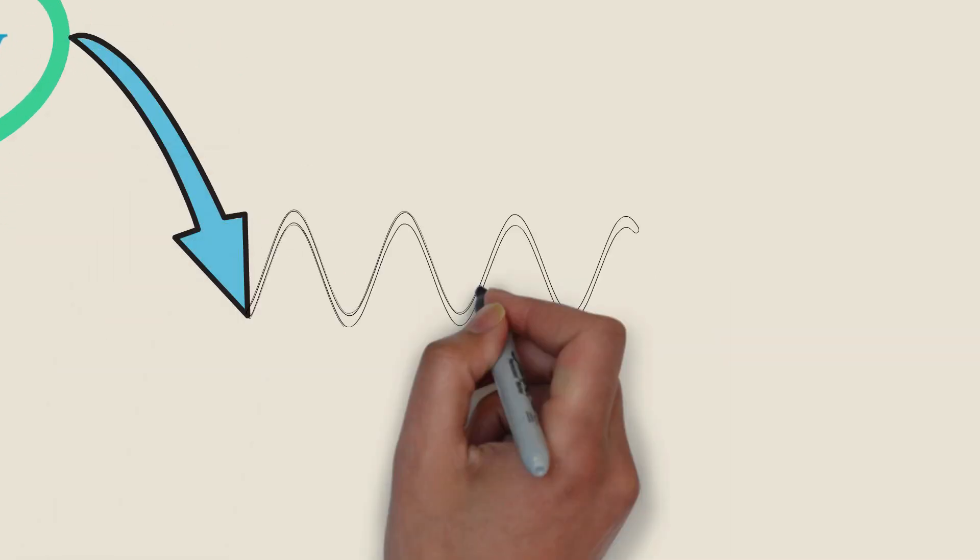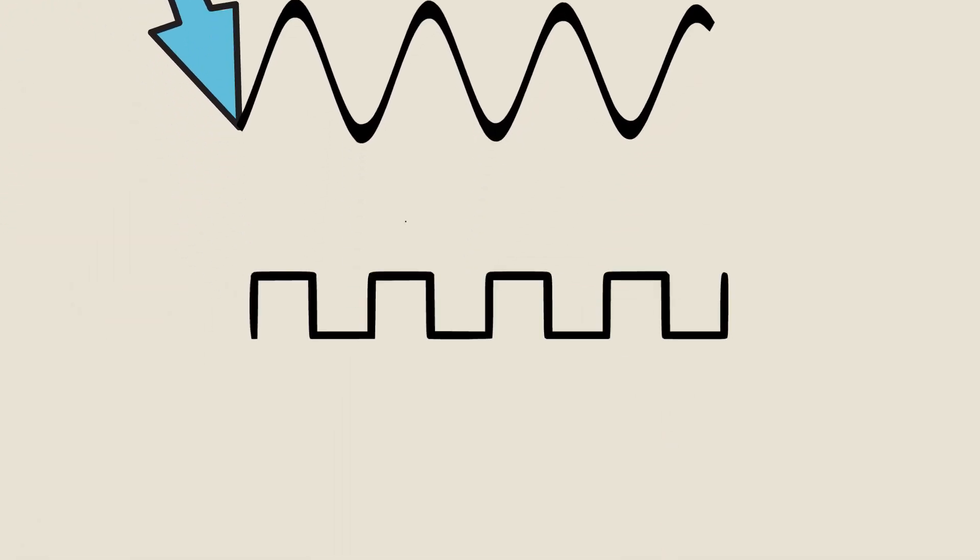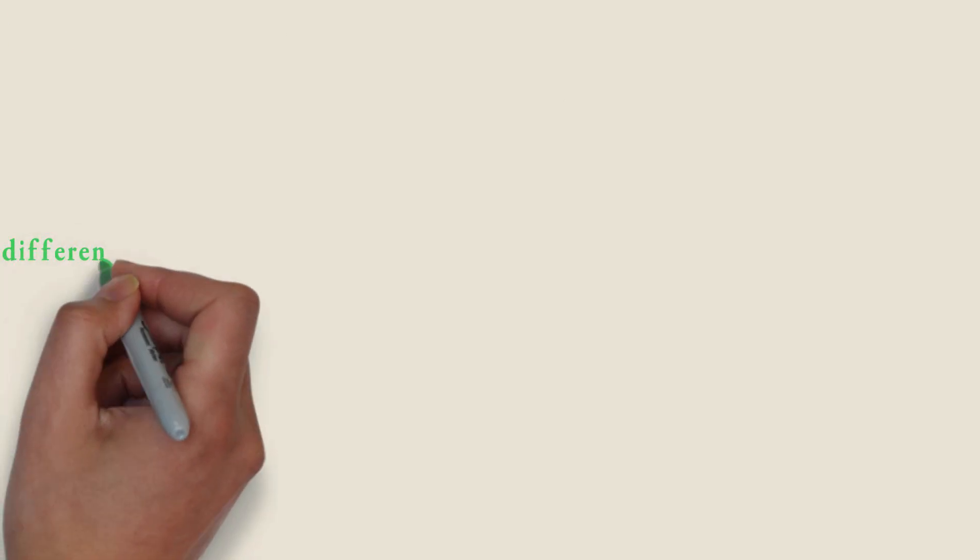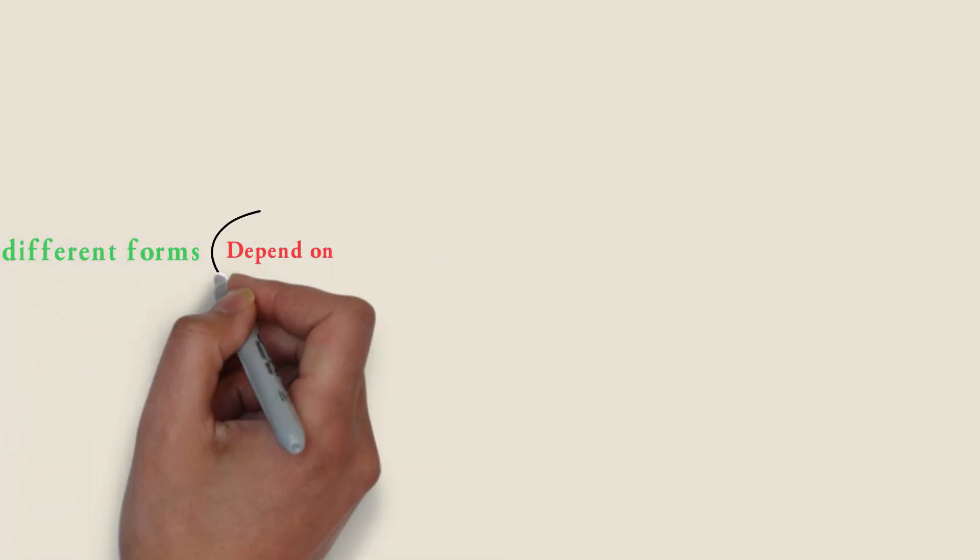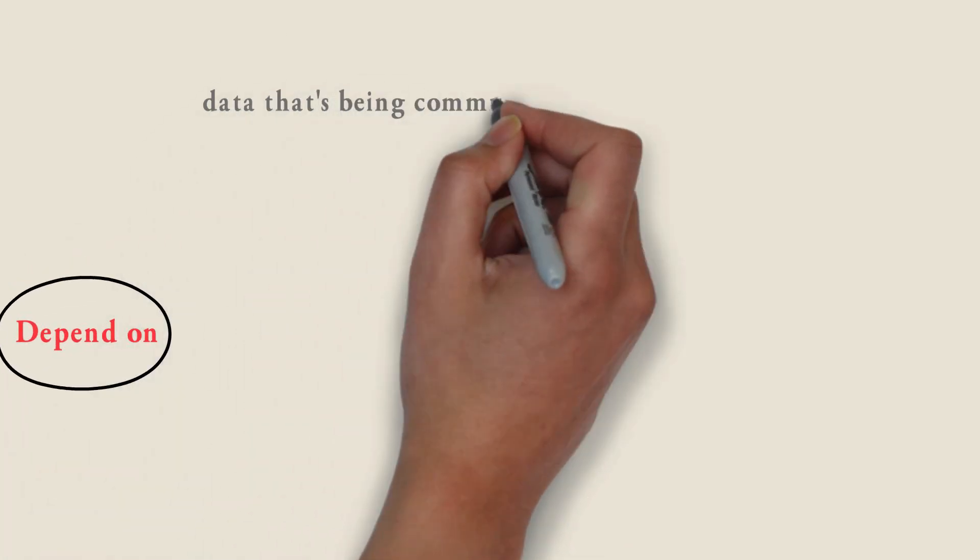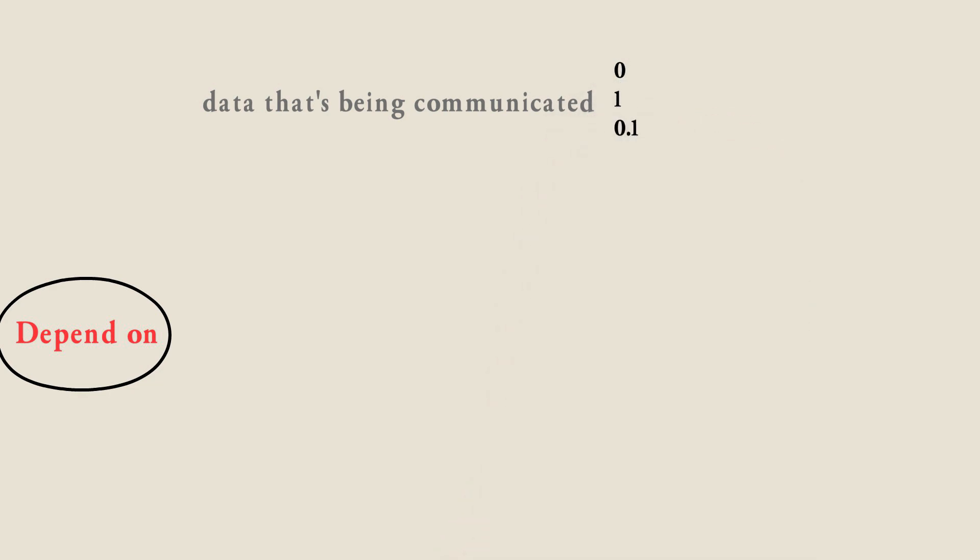Today we are going to talk about the different signal types. Signals come in many different forms. Those forms can depend on the data that's being communicated, 0 or 1 or 0.1.